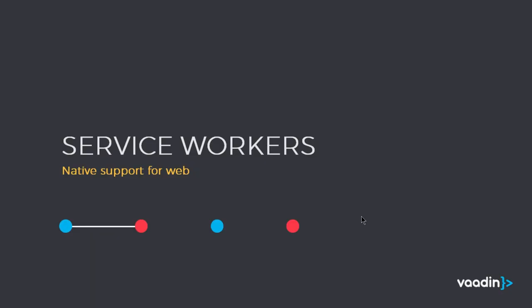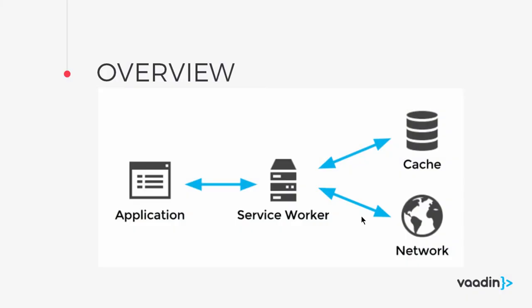Let's talk about the building blocks. Service workers are basically what brings native support to the web. From a diagram borrowed from Vaadin's presentation: the service worker is an intermediary between the application and the data. It runs locally on the phone — if you're connected to the network it fetches from the internet, and if not it fetches from a local cache, giving your app offline support.